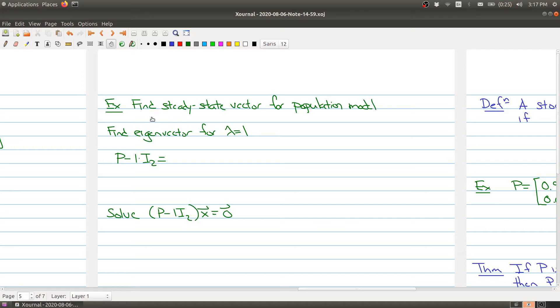So let's say we want to find the steady state vector for our population model or our migration model between the two planets. So what we need to do is first find the eigenvectors for lambda equals one. So we do our usual procedure. It's kind of good review, kind of everything that we've learned in this course. So we first take P.